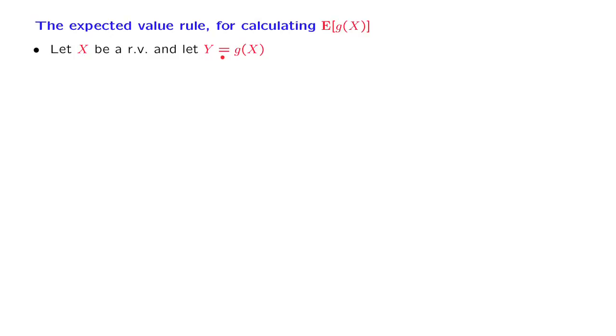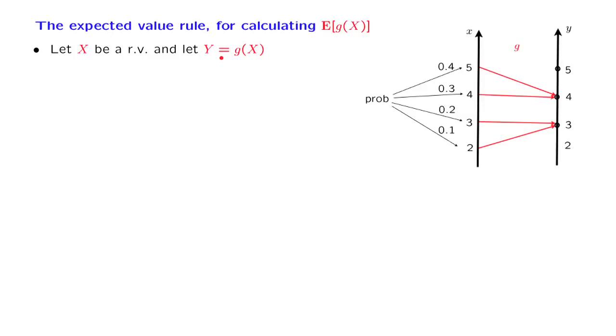We will illustrate the ideas involved through a simple numerical example. In this example, we have a random variable x that takes values 2, 3, 4, or 5 according to some given probabilities. We are also given a function that maps x values into y values, and this function g then defines a new random variable. So if the outcome of the experiment leads to an x equal to 4, then our random variable y will also take a value equal to 4. How do we calculate the expected value of y?